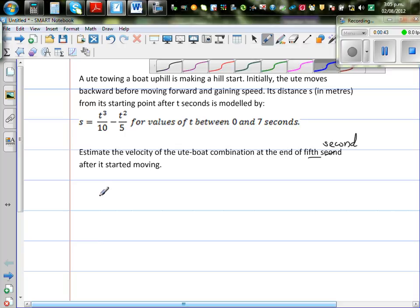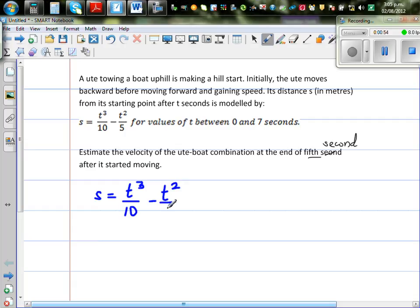What is given: s as a function of t is t³/10 - t²/5. Velocity is the derivative of your distance with respect to time, so velocity is ds/dt. Here you want to find the velocity, so you have to differentiate this function with respect to t.